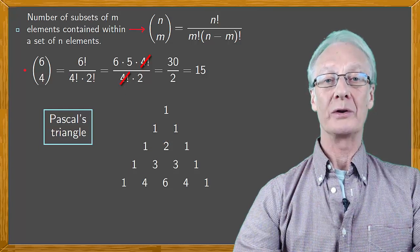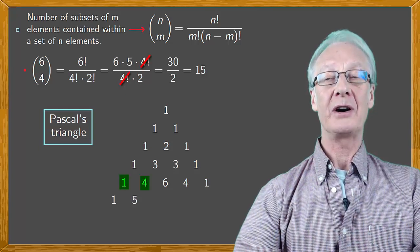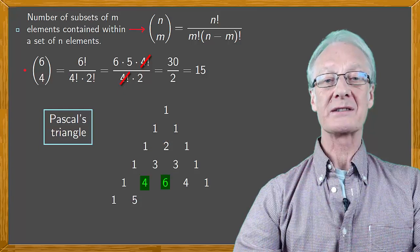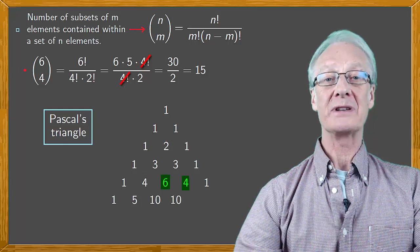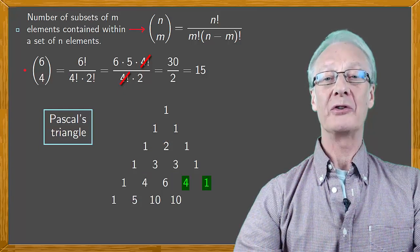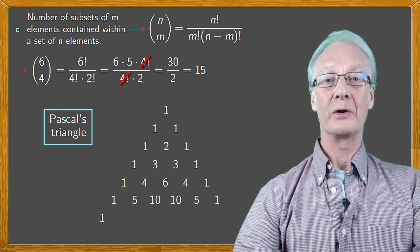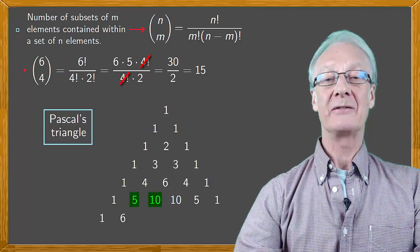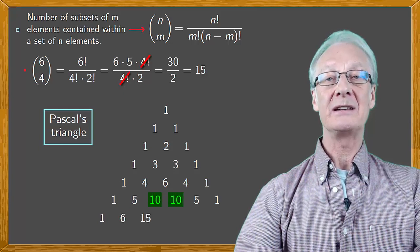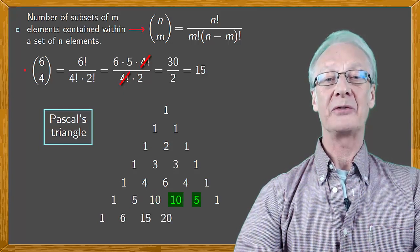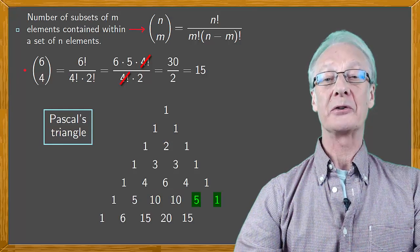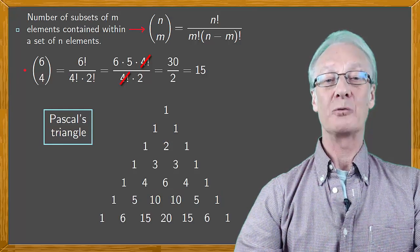Next row, one, one plus four, five, four plus six, ten, six plus four, ten, four plus one, five, and one. Next row, one, one plus five, six, five plus ten, fifteen, ten plus ten, twenty, ten plus five, fifteen, five plus one, six, and one, and so on.